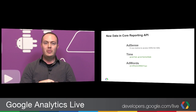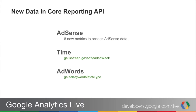We also released new data in the Core Reporting API. One of our top feature requests was AdSense data, so we've added a whole bunch of new AdSense metrics — you can visit the Dimensions and Metrics Explorer to see and learn more about them. We also added a few more time dimensions: GA ISO year and ISO year ISO week. These should be used together with ISO week dimensions and not combined with Gregorian calendar entries like GA week. Finally, we added a new AdWords dimension — the ad keyword match type — which shows which match types were applied to a specific keyword. All of these are available through the Dimensions and Metrics Explorer and the Query Explorer.